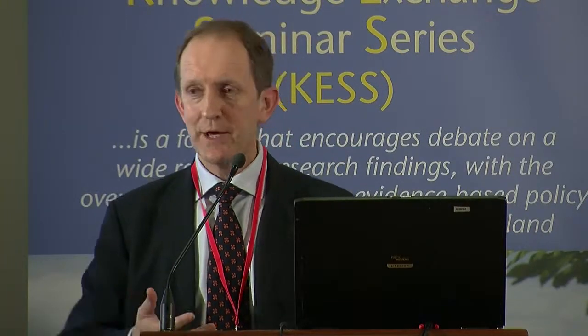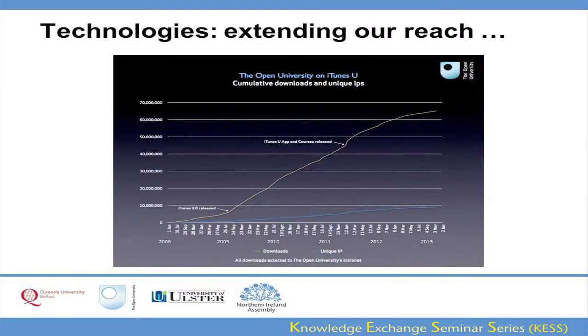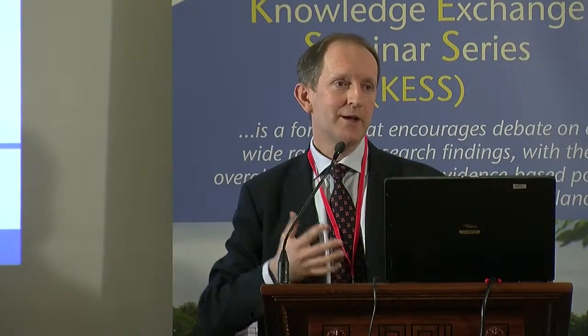I'm using Open University examples here, not simply to blow our own trumpet, but just to give illustrations of things that other universities are doing too. This is iTunes U, the Apple site. The Open University, along with other universities, has been involved in iTunes U, providing university materials on this site that can be freely downloaded. The OU started in 2008 with no downloads, and you'll see the figures in 2013 are approaching 70 million downloads. It just gives you an indication of the scale that can be achieved using technologies that simply weren't available a few years ago.